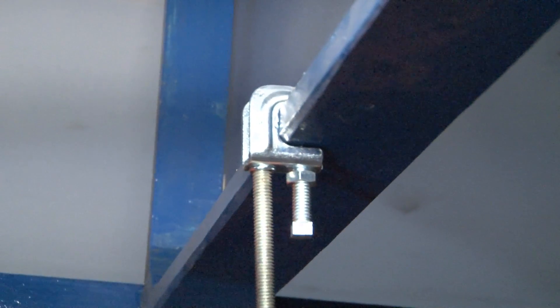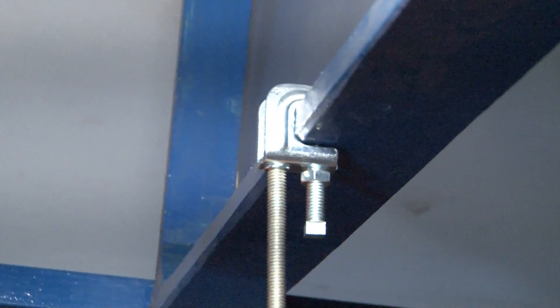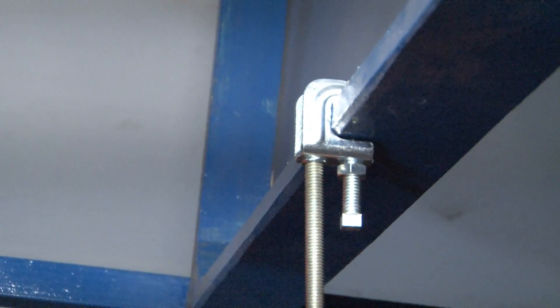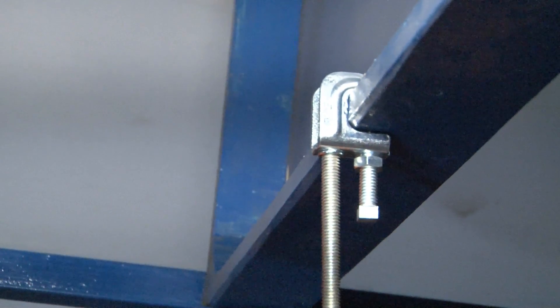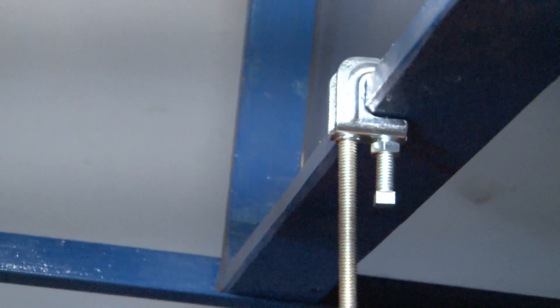What's nice about this beam clamp is if you look at the top, you can adjust the level of the threaded rod after it's in the field. You can just keep spinning it if you need to raise up or lower the appliances that are attached.